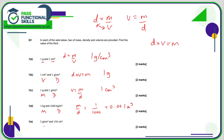Here we've got a density and a volume, so we want the mass. Density times the volume is the mass, and so it's going to be 5 times 150, which gives 750 grams.